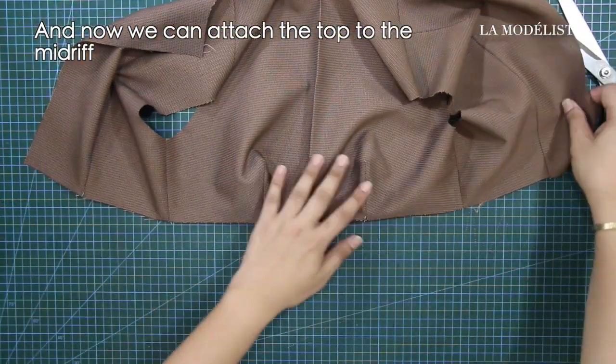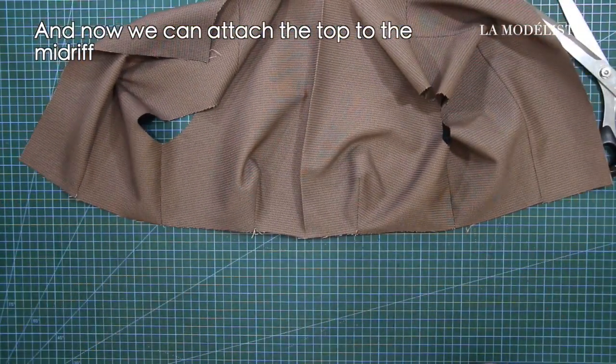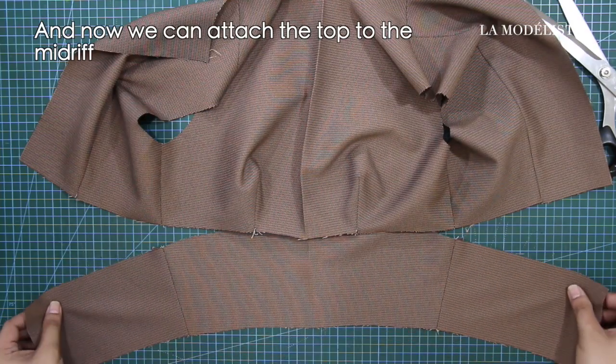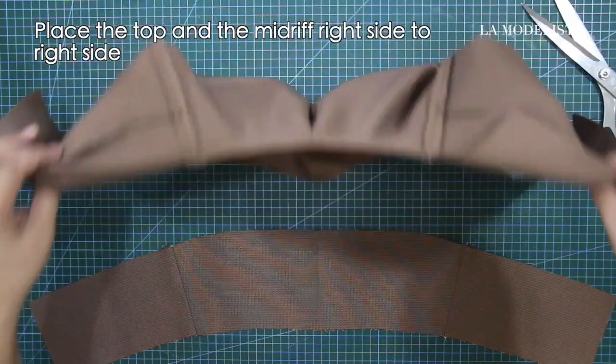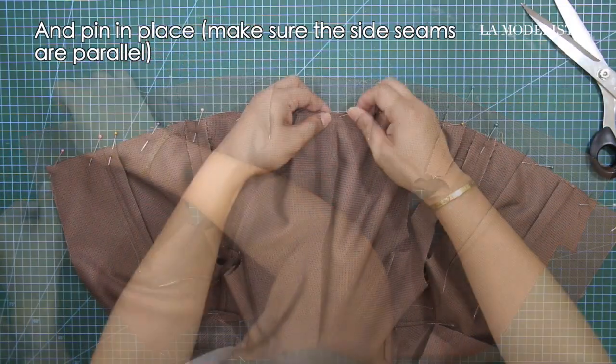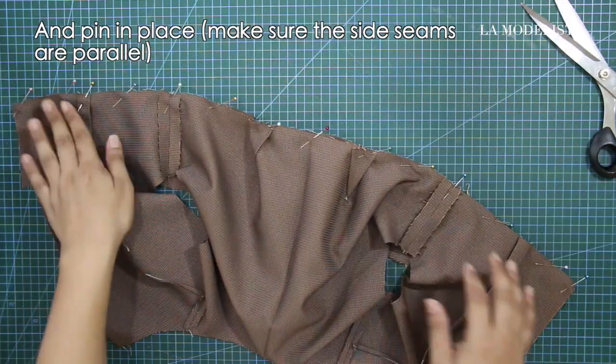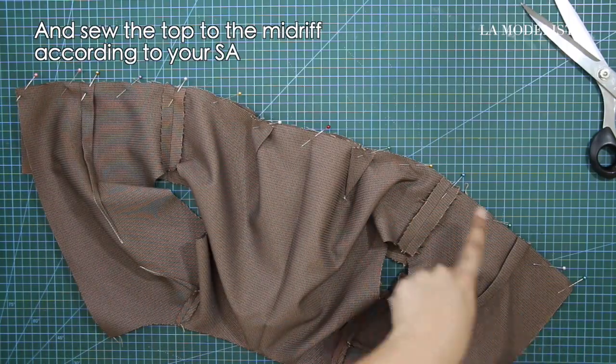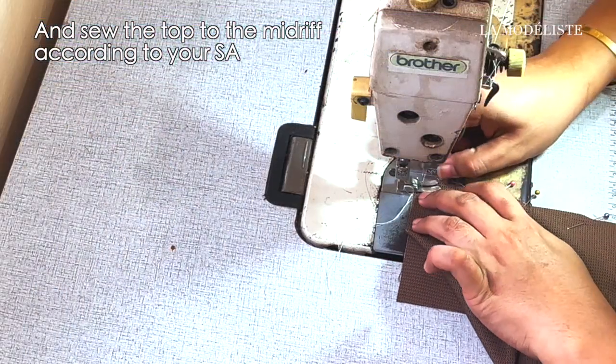And now we can attach the top to the midriff. Place the top and the midriff right side to right side. And pin in place and make sure that the side seams are parallel. And sew the top to the midriff according to your sewing allowance.